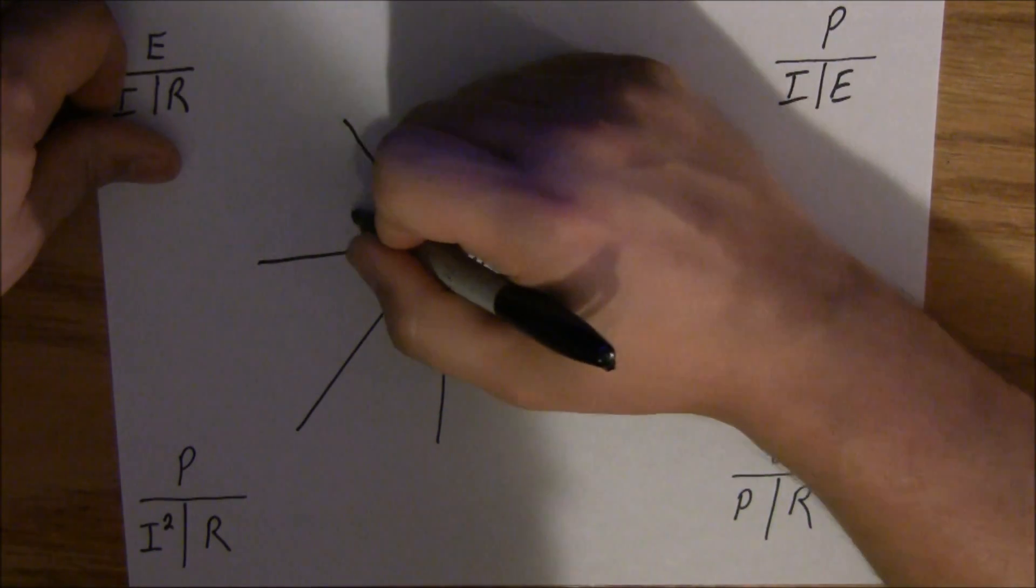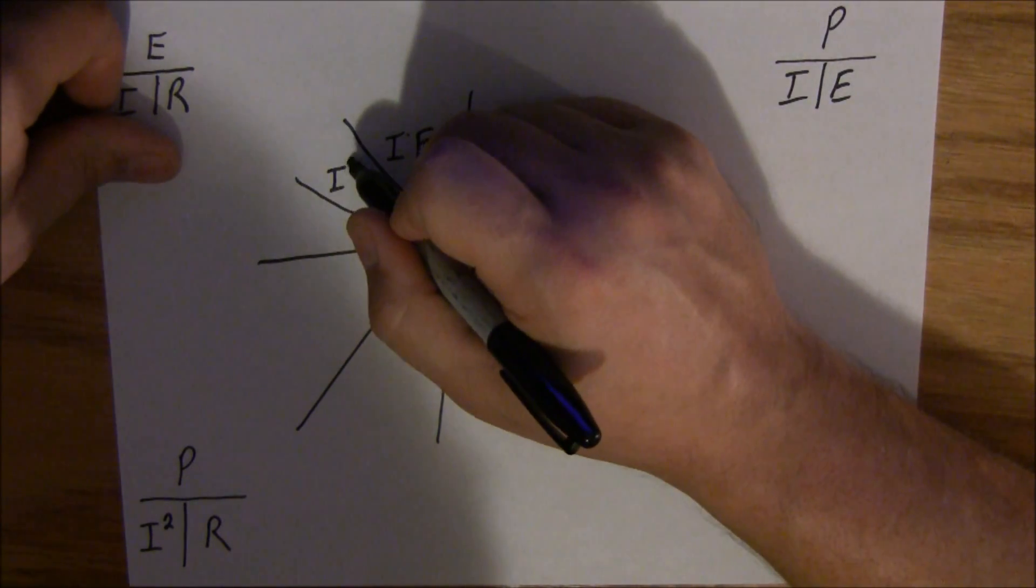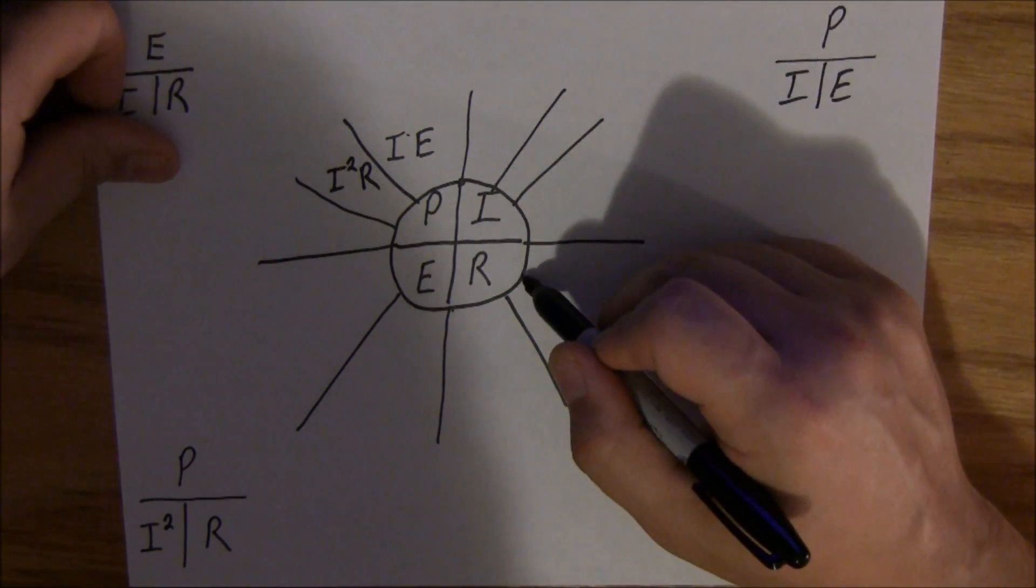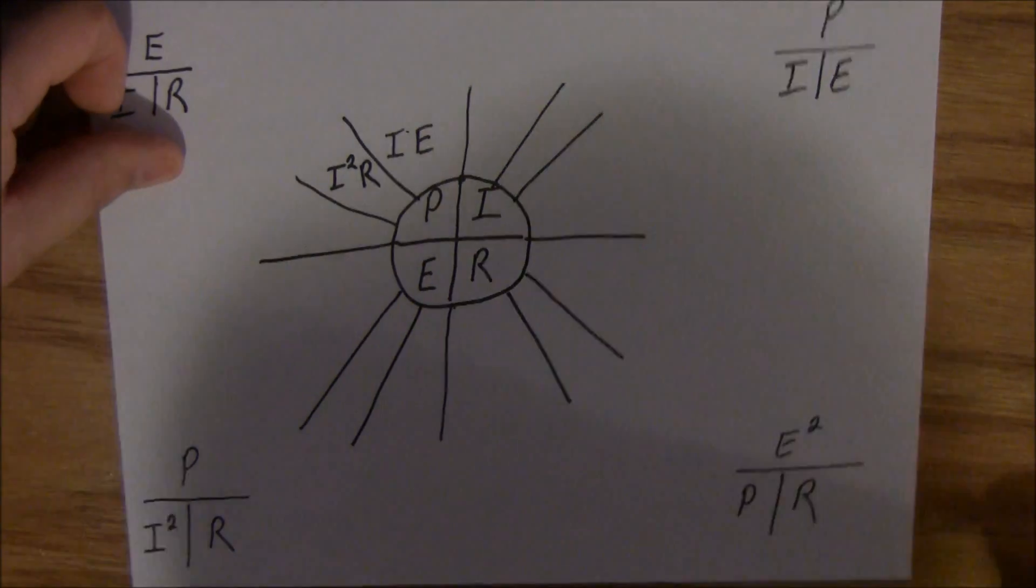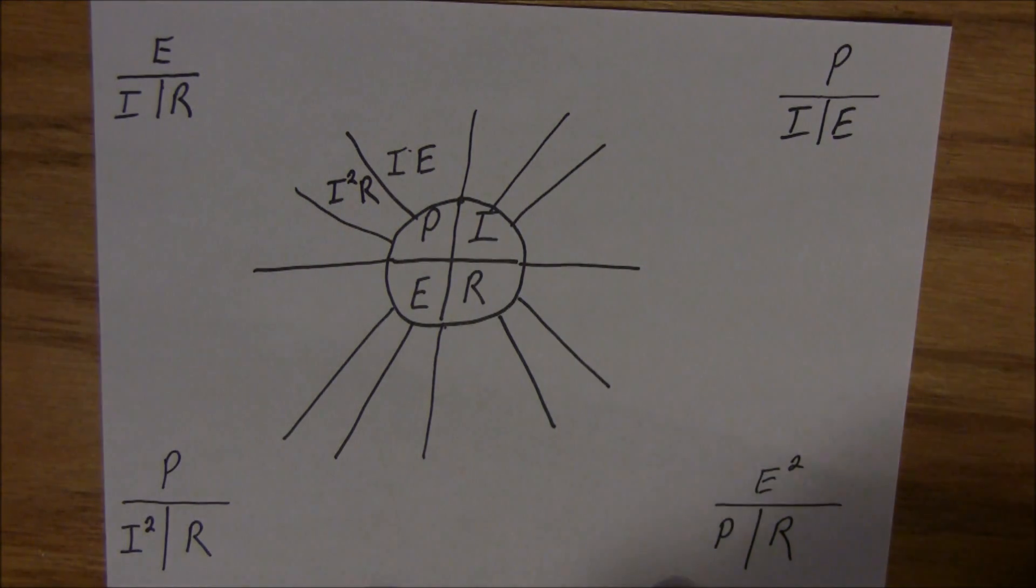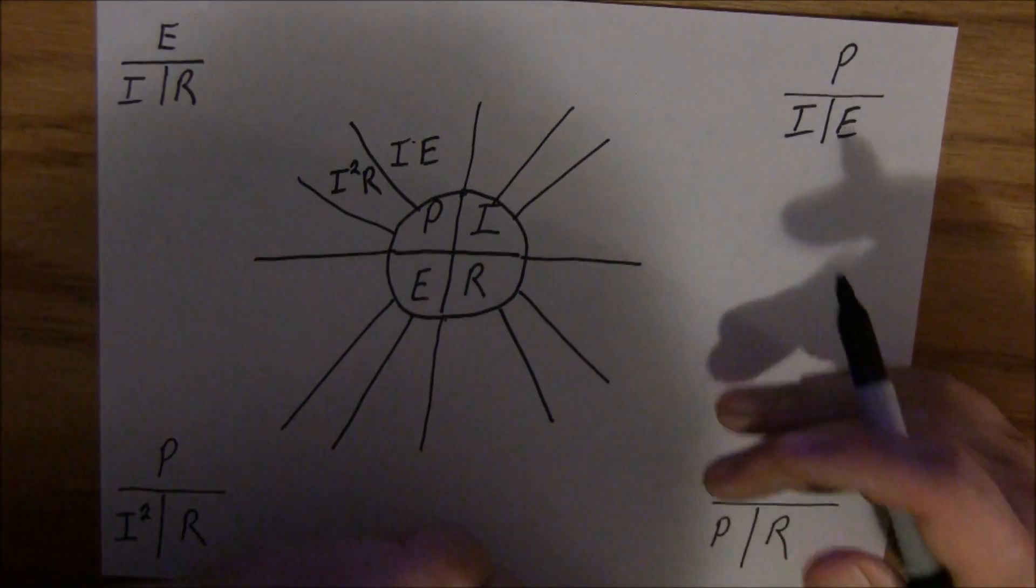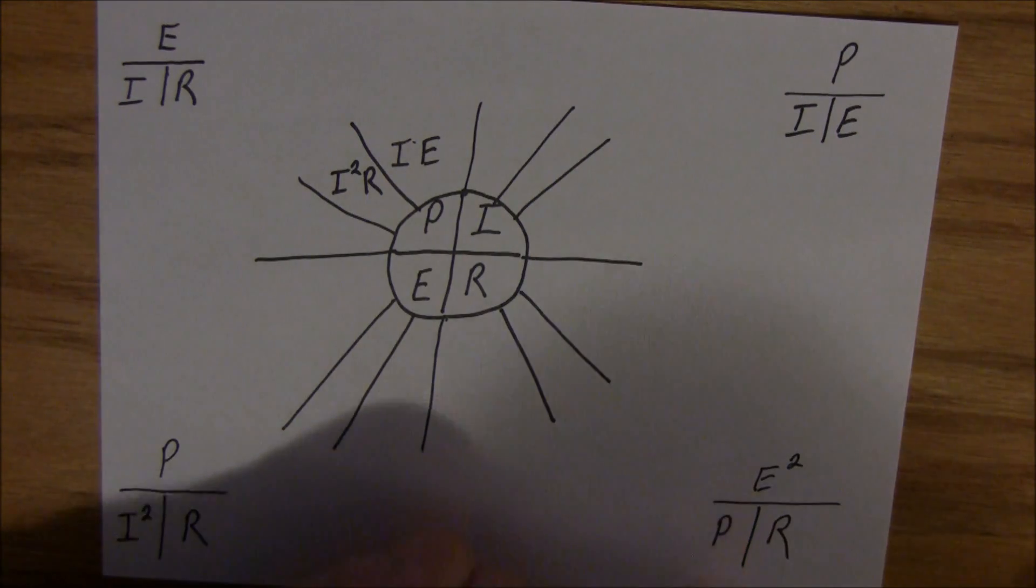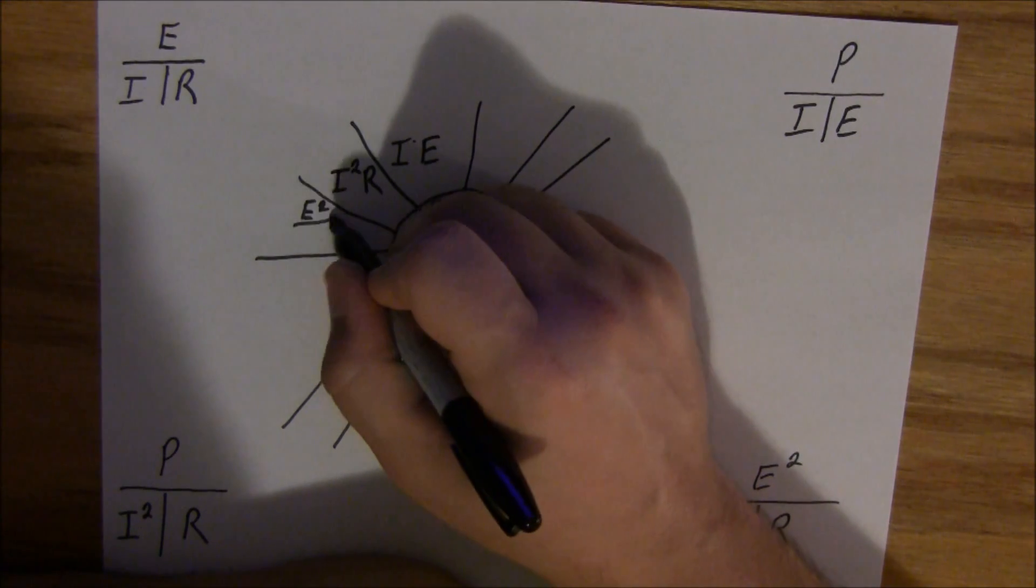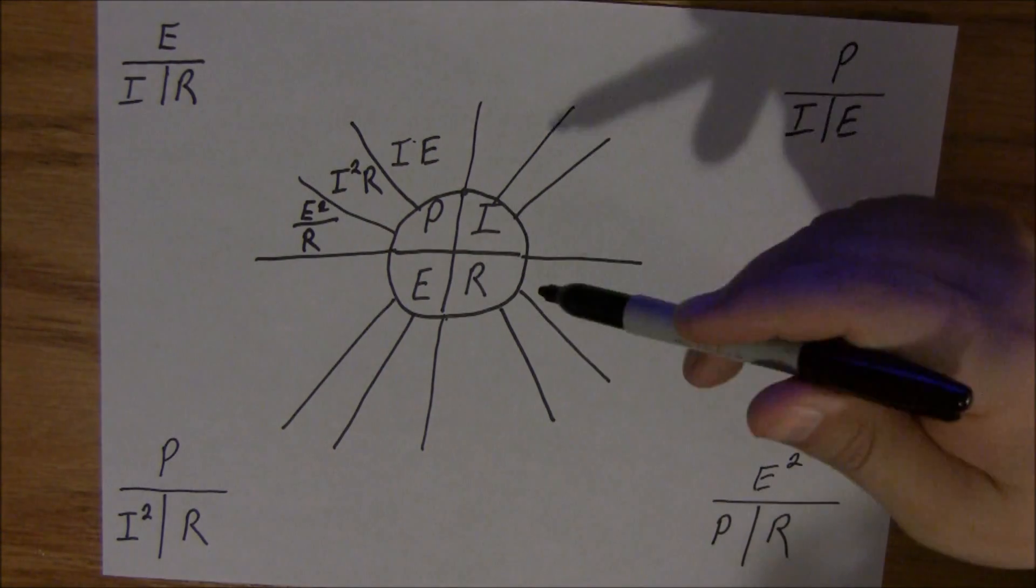We have a P right here. P equals E squared over R. And I didn't draw this out quite right. One, two, yeah, I need three. I squared times R. And I'm sorry, I drew my graph a little goofy. You've got to add an extra line to all of these. You've got to add three segments per item there. And now where else do we have a P?